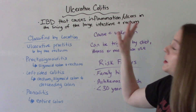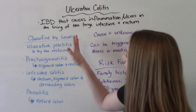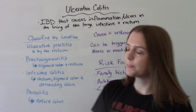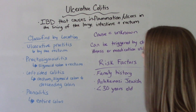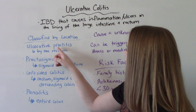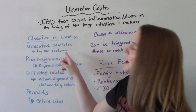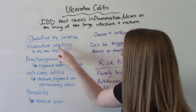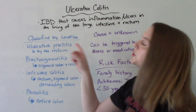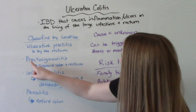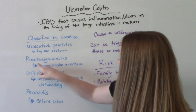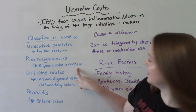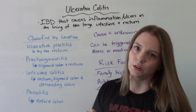It's unique because it can be classified by where in the large intestine it occurs. So you have ulcerative proctitis, which is by the rectum — you can remember that P-R-O-C refers to rectum. Then proctosigmoiditis involves the rectum and also the sigmoid colon.